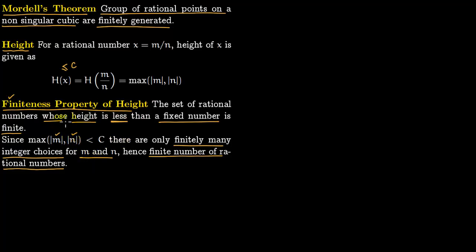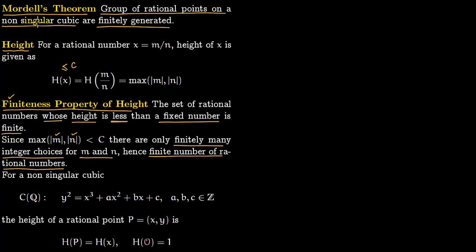Now we want to transfer this notion to our non-singular cubic or elliptic curve. Say we are given the curve over the rationals: y² = x³ + ax² + bx + c, where a, b, c are integers. For a point P on this curve with coordinates x and y — both rational — the height of the point is defined as the height of x, which is a rational number.